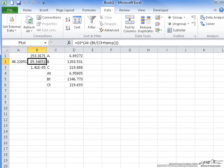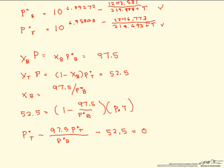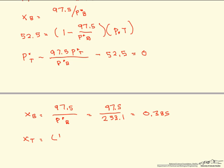And now, knowing this, we are able to solve for our mole fractions. So going back to our equations here, let's take a look. So we have that x sub b equals 97.5 divided by the vapor pressure of benzene, which is 97.5 divided by 253.1, which we got from our solver. And that equals 0.385. And this allows us to solve for our mole fraction of toluene in the liquid, which is just 1 minus x sub b, which is 0.615.